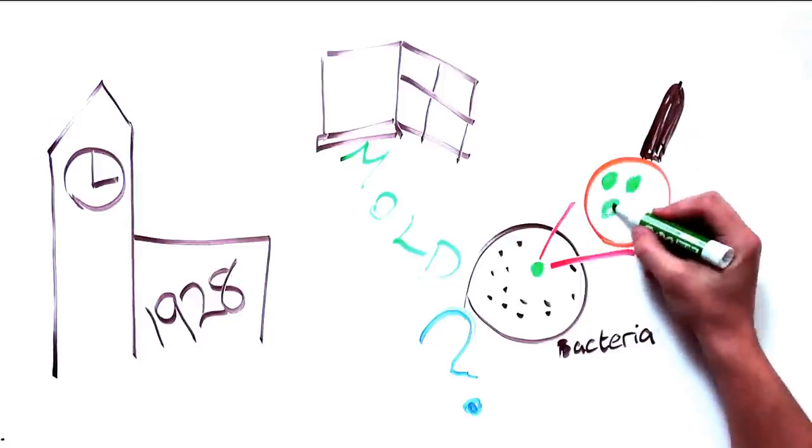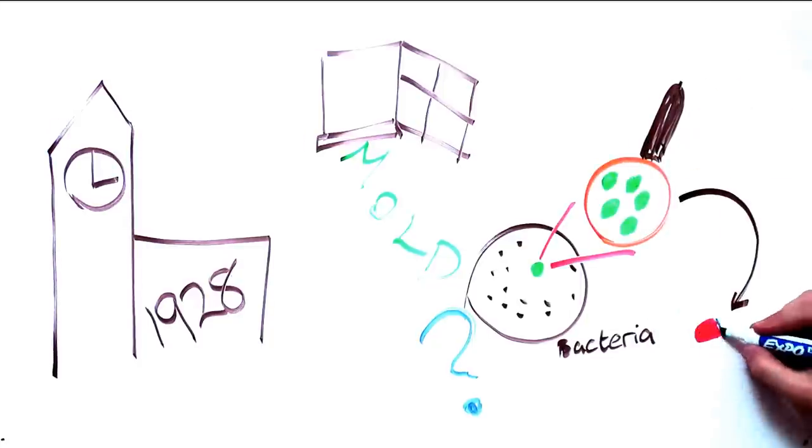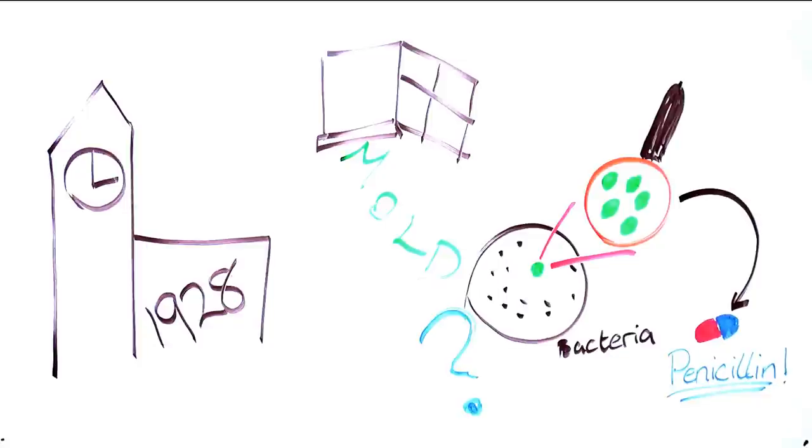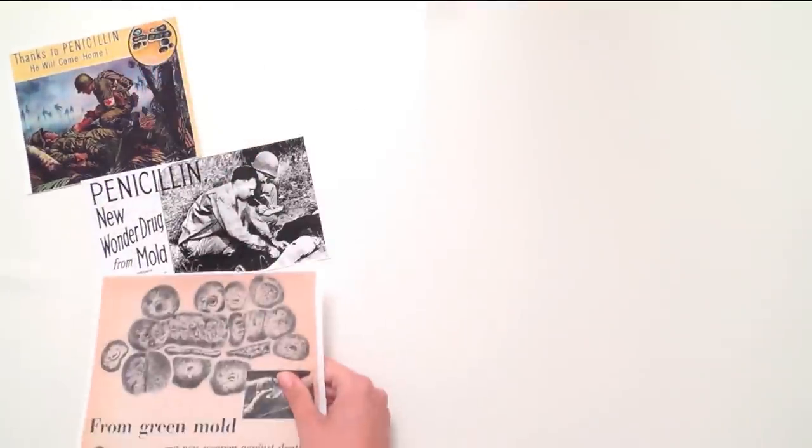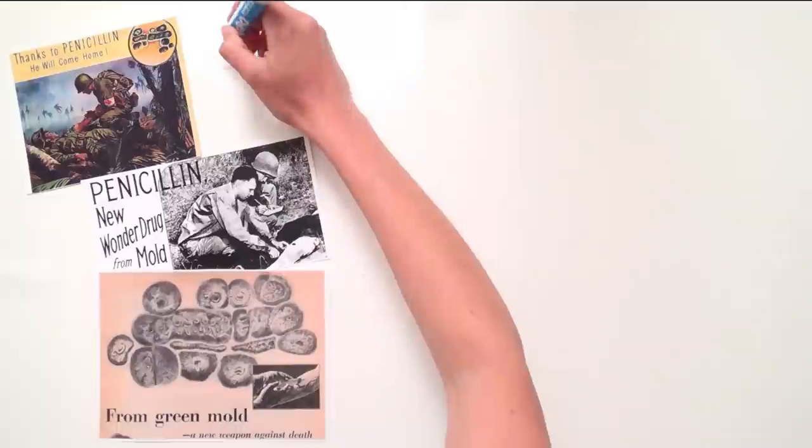In 1940, penicillin, the first antibiotic, was isolated from this very mold. The discovery of penicillin revolutionized medicine. Antibiotics were initially able to treat nearly all bacterial infections. They were a miracle cure.